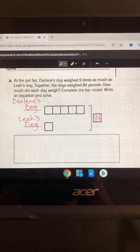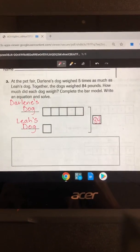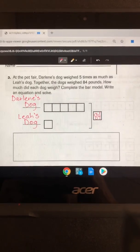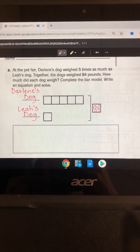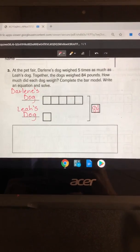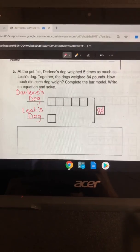Hi guys, I'm gonna start with number three in the high-stakes testing booklet. It says at the pet fair, Darlene's dog weighed five times as much as Leah's dog. Together the dogs weighed 84 pounds. How much did each dog weigh? Complete the bar model and write an equation and solve.